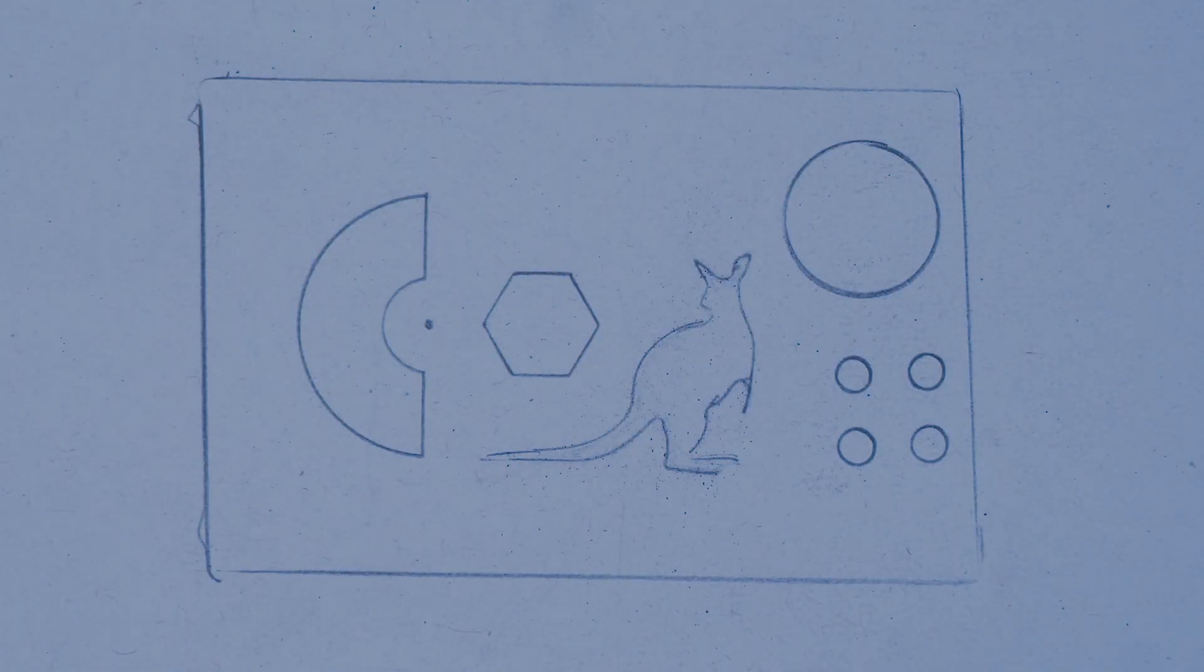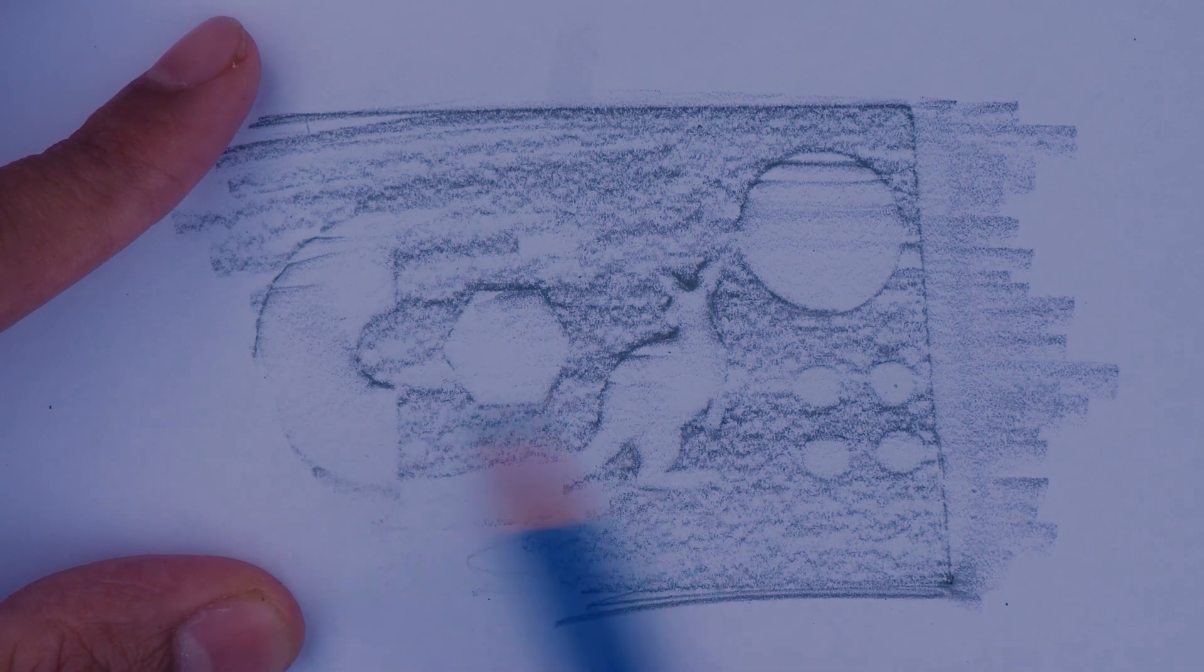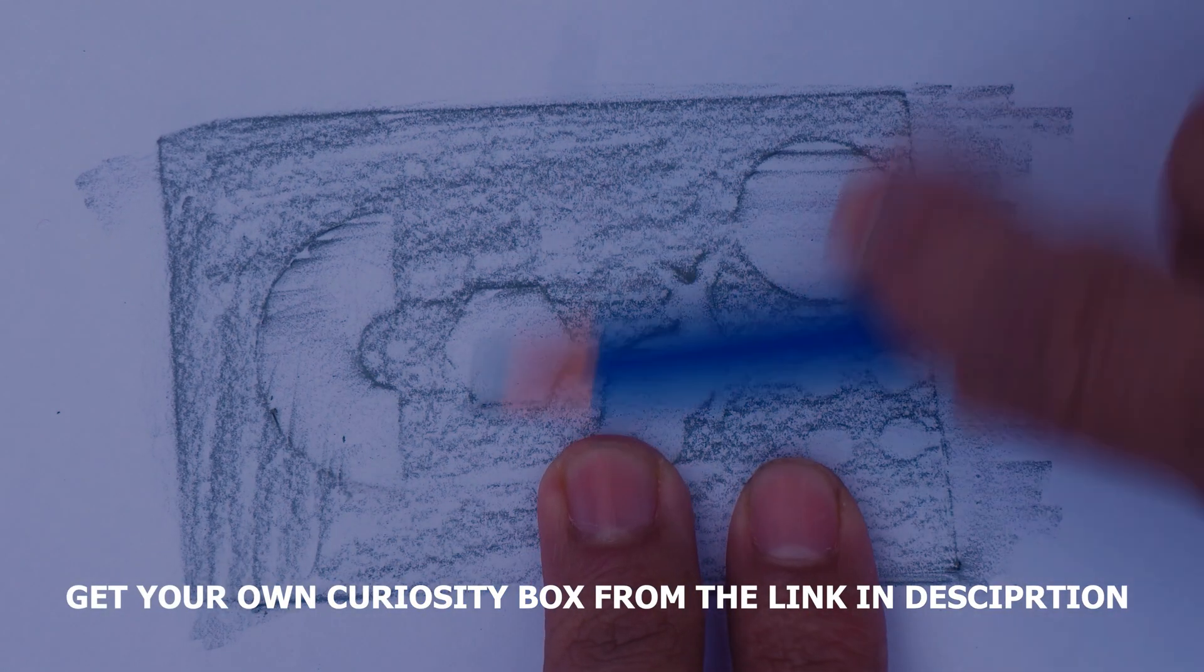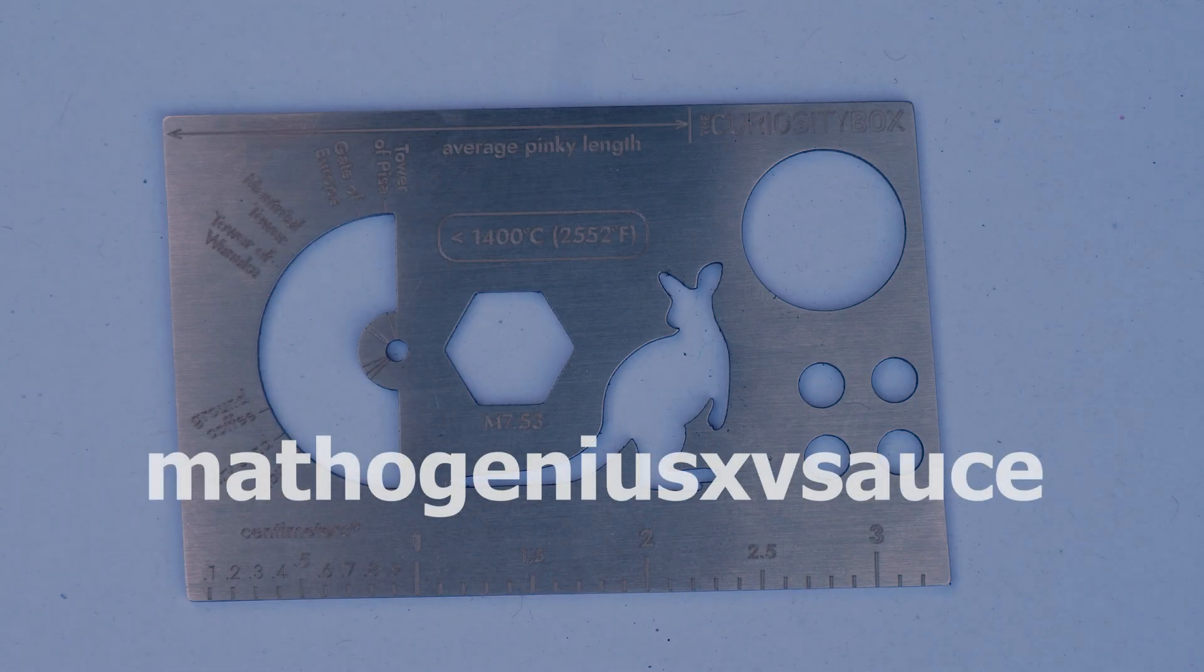Forget about drawing those boring 45, 30, and 90 degree angles. Let's draw 92, 93, 87, 88 degree angles swiftly with this tool. So get your own curiosity box from the link in the description of this video and use Mathogenius Times Vsauce to get a 25% discount.